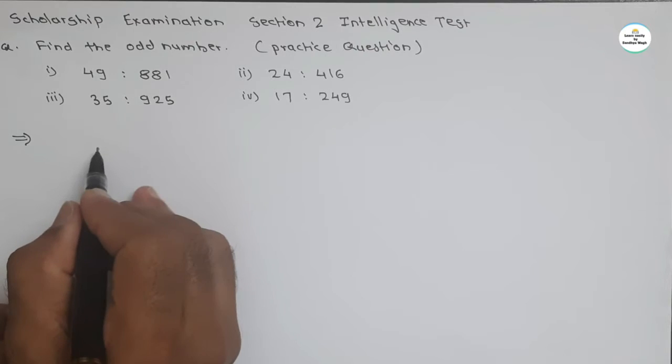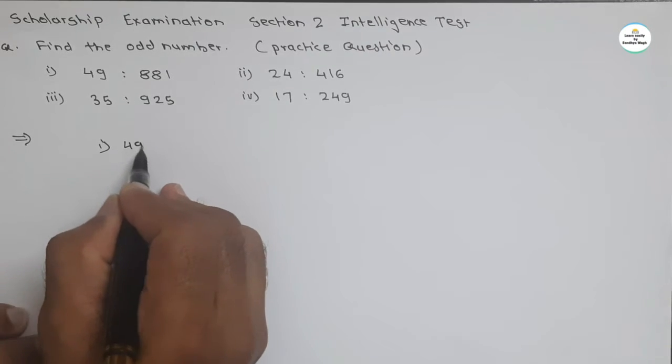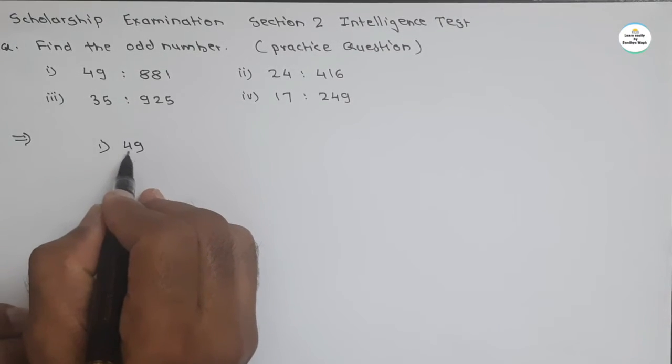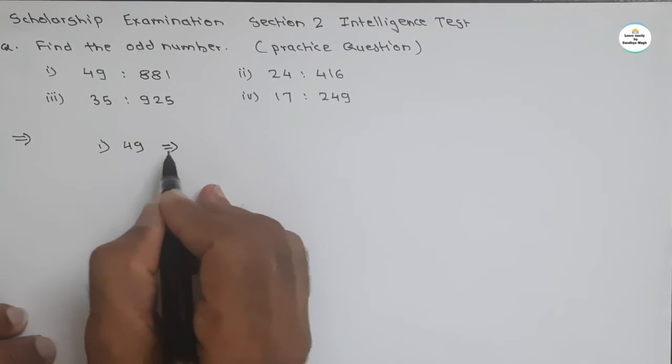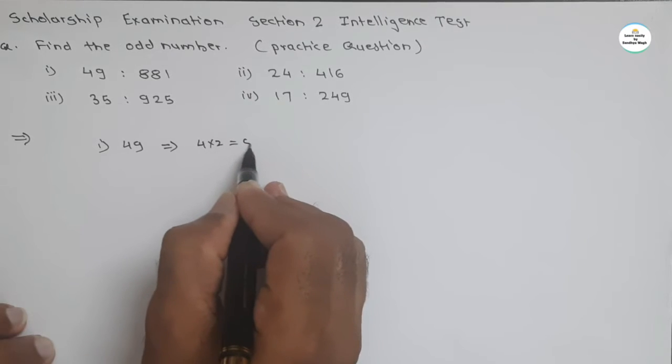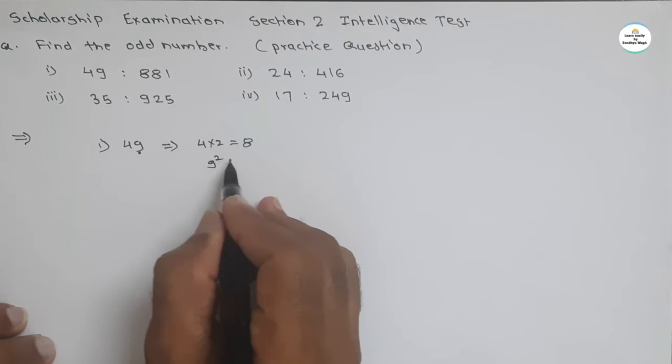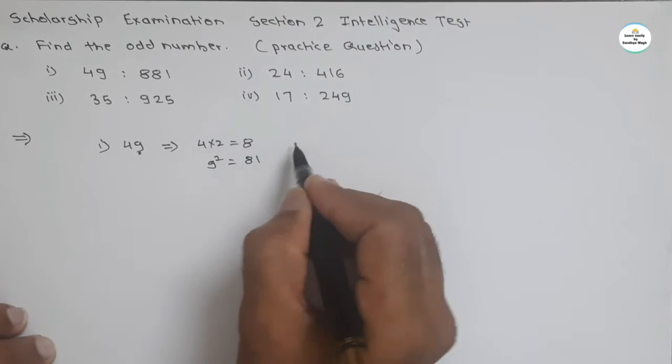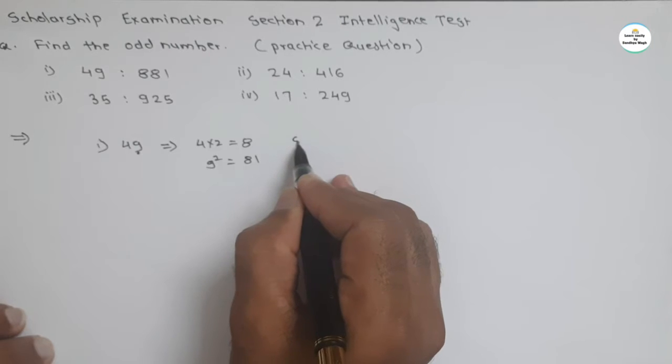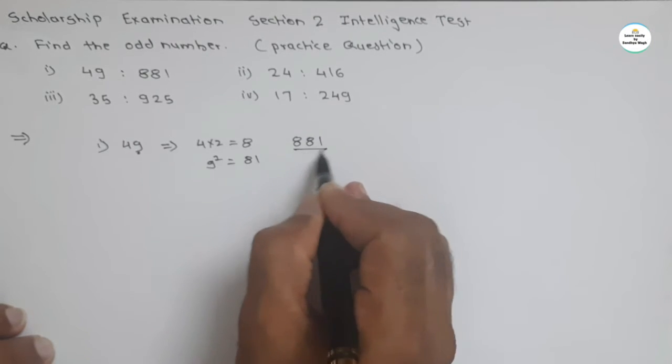So see first number 49. If we multiply the first digit 4 into 2 we get 8. And if we square this last digit 9, we get 9 square equal to 81. If we just put here, we get 881. So this is the relation.